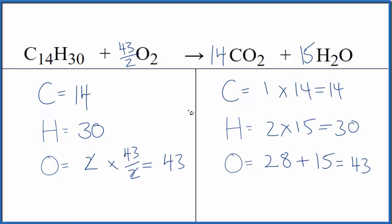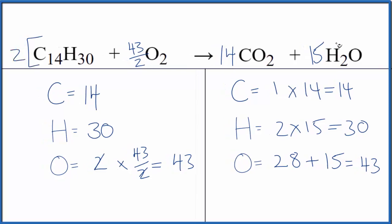Some teachers, they don't like to have these fractions, but we can fix that pretty easily. Let's just multiply everything by 2 and then we get 2, 43, 28, 30 as our coefficients. So this is also the correct ratio.